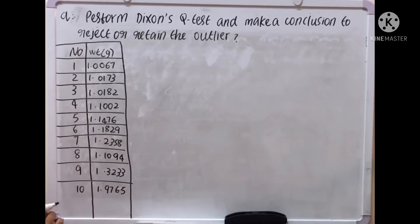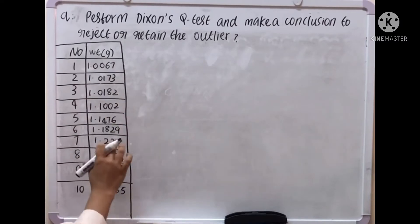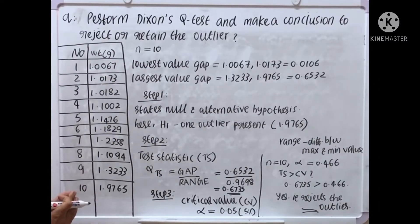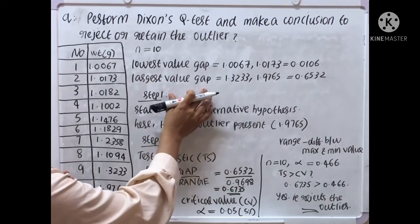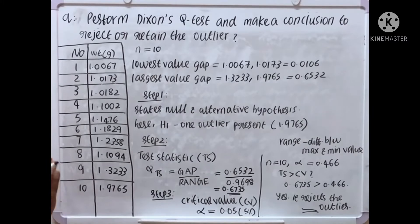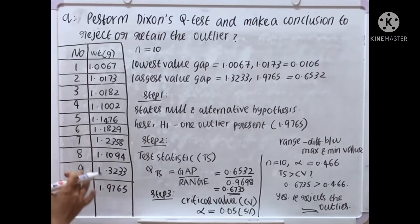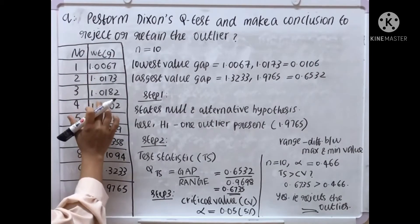Samples are here and the weight is also given in this table. N equal to 10, number of samples equal to 10. We have to calculate the gap between the lowest values and largest values. Here, the lowest value, that is the minimum value, is 1.0067.